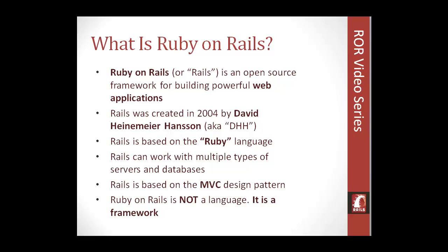Rails was created in 2004 by David Heinemeyer Hansen, also known as DHH among geeks. He created Ruby on Rails in 2004, and the Ruby language was created in 1993, so Rails came about 10 years later. As I said, it's based on the Ruby language.